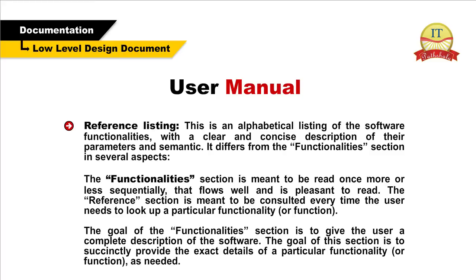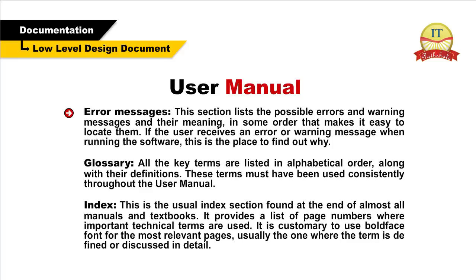Reference listing — this is an alphabetical listing of the software functionalities with a clear and concise description of their parameters and semantics. It differs from the functionality section in several aspects. The functionality section is meant to be read once, more or less sequentially, in a way that flows well and is pleasant to read. The reference section is meant to be consulted every time the user needs to look up a particular functionality or function. The goal of the reference section is to succinctly provide the exact details of a particular functionality as needed. Error message — this section lists the possible errors and warning messages and their meaning, in an order that makes them easy to locate. If the user receives an error or warning message when running the software, this is the place to find out why.